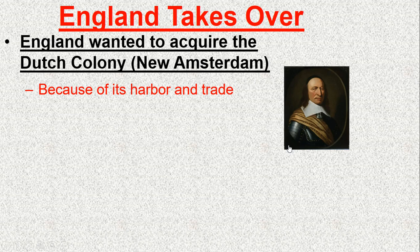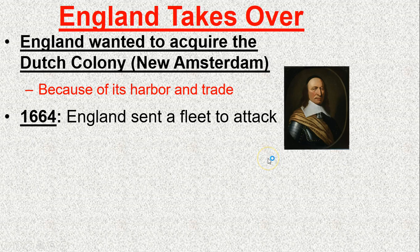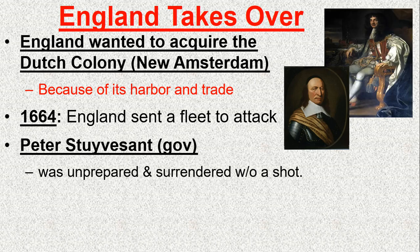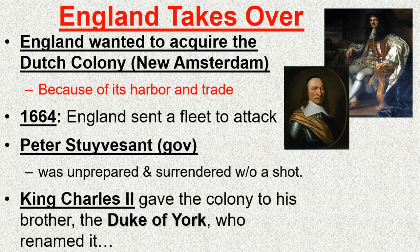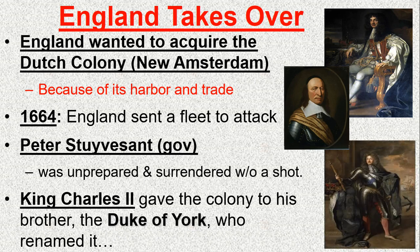England eventually takes over New Amsterdam. Competition is one of our major themes — the Age of Exploration resulted in wars and conflict among European countries over space and trade. England, seeing that New Amsterdam had access to the interior of the continent through the Hudson River, sent a fleet to attack it. The Dutch governor Peter Stuyvesant wasn't prepared and the colony surrendered without a shot. King Charles then gave this colony to his brother the Duke of York, who named it New York.